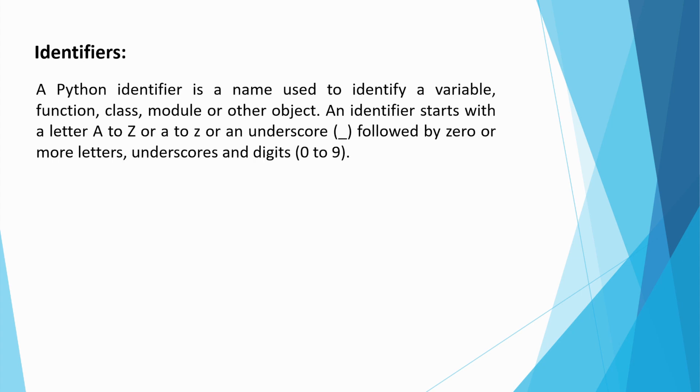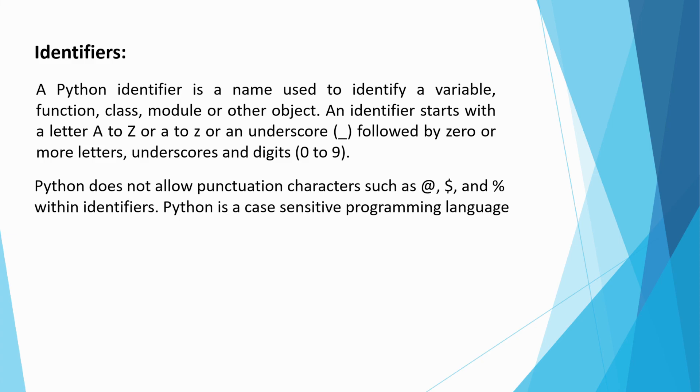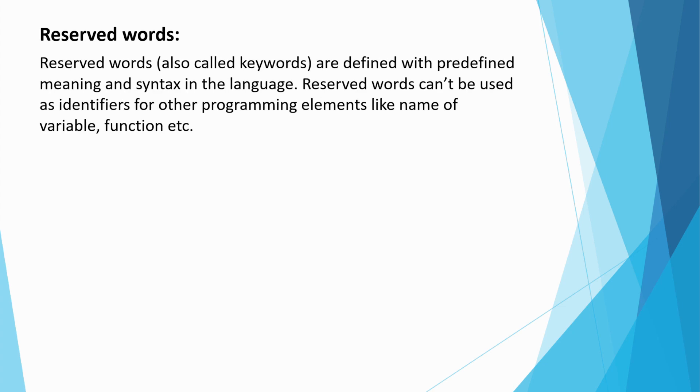A python identifier is a name used to identify a variable, function, class, module or other object. An identifier starts with a letter uppercase A to Z or lowercase a to z or an underscore followed by zero or more letters, underscores and digits. Python does not allow the punctuation characters such as at the red dollar sign and percentage within identifiers. Python is a case sensitive programming language. Reserved words also called keywords have predefined meaning and syntax in the language.